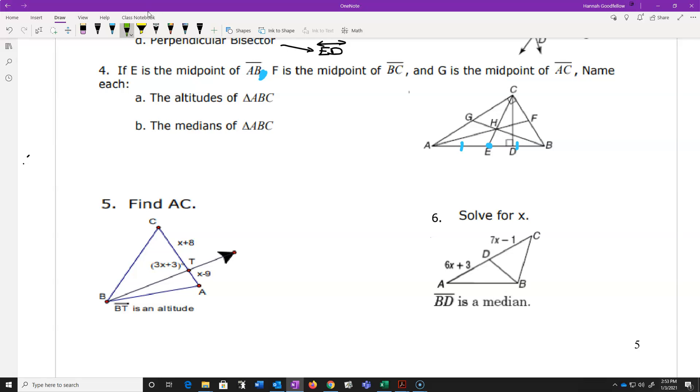Now, the next one says F is the middle of BC. Oh, that means this segment and this segment are exactly the same size. And then last but not least, G, oh, my favorite letter, is the midpoint of AC. So that's the point G right there. So this one must be the same size as that one.